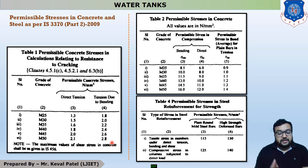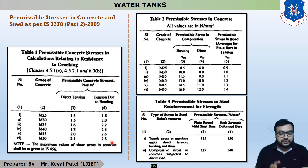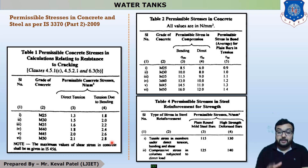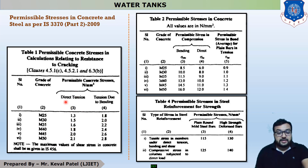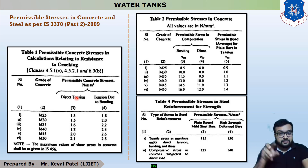For example, if the question specifies M30, and in this chapter whenever no clarification is given regarding M20, M25, or M30, we use M30 as the standard. For M30, the value of sigma C B T is 2 N/mm². The direct tension permissible stress, sigma C T, is equal to 1.5 for M30 grade of concrete.